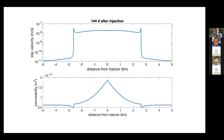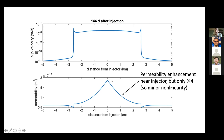Slip velocity is fairly uniform in the center of the fault, peaked slightly near crack tips. Permeability is somewhat elevated in the center due to permeability enhancement, but only by a factor of about four. Permeability enhancement turns out not to be very important — neglecting it doesn't change the solution much. Dilatancy, in contrast, has a larger effect.